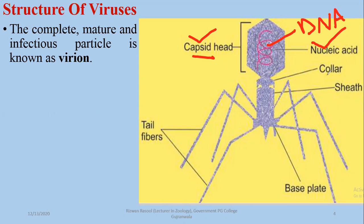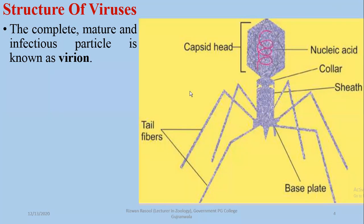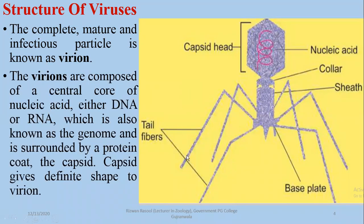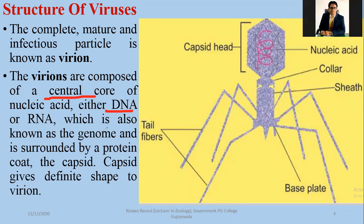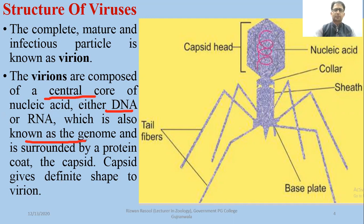The collar, sheath, tail fibers, and base plate are also protein in nature. In the virions, as shown here, the central core is DNA, or RNA can also be found. In addition to this, the nucleic acid is also known as a genome and is surrounded by a protein coat called capsid. Capsid gives the definite shape to the virion.